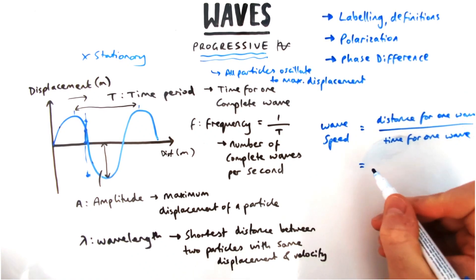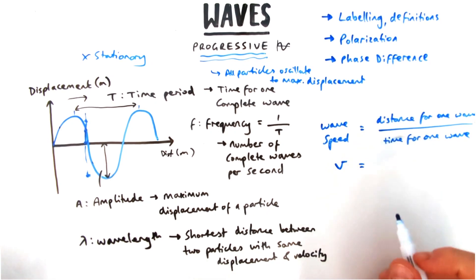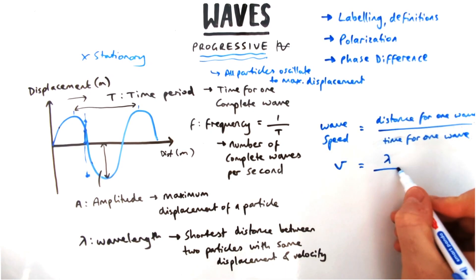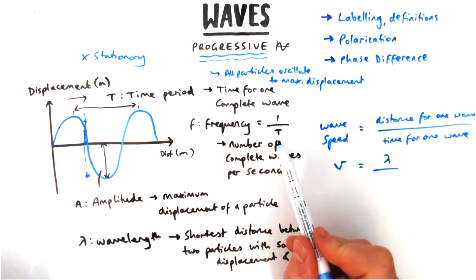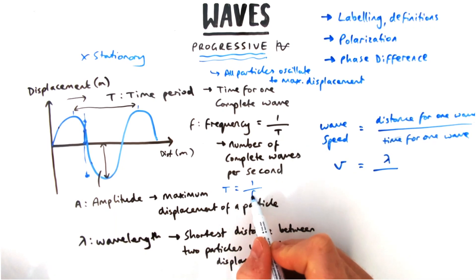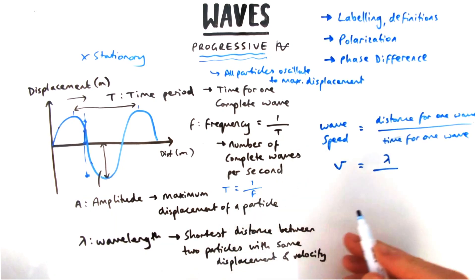The distance of one cycle, as we've just mentioned, is known as the wavelength. So wavelength is going to be our distance. Now the time taken for one wave is going to be the time period, so capital T.